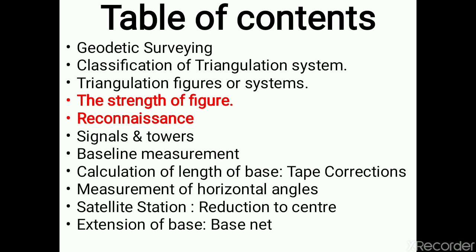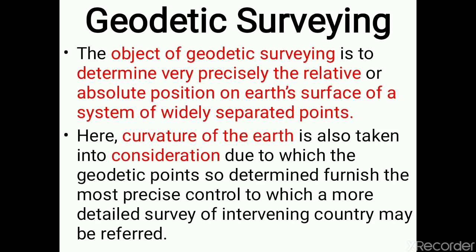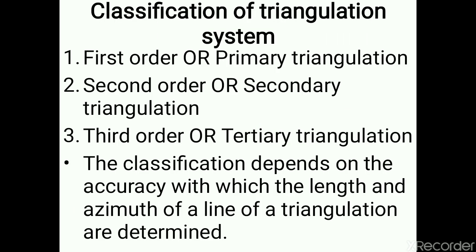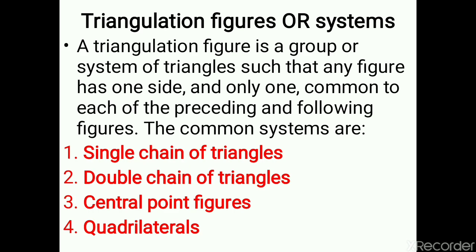Earlier we discussed geodetic surveying and classification of triangulation systems. For a quick revision: in geodetic surveying, we determine the relative and absolute positions of different points on the earth's surface, taking the curvature of the earth into consideration. Triangulation is a system of interconnected triangles where one line length, called the baseline, is known along with the angles.